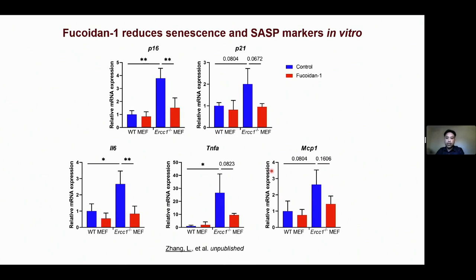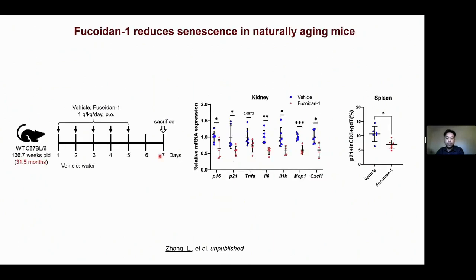The senomorphic activity of fucoidin one was further confirmed in other human cells. In vivo, after five days of acute treatment in very old wild-type mice, fucoidin one can reduce senescence in multiple tissues including kidney, shown here. It also reduced the number of p21-positive gamma-H2AX cells in the spleen.